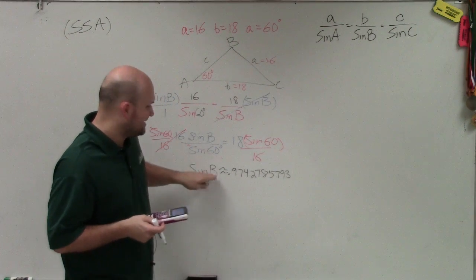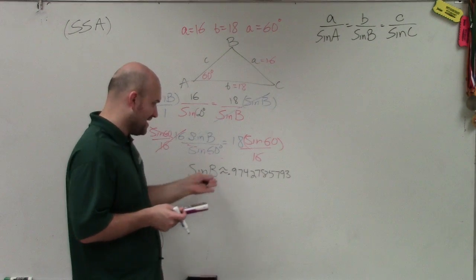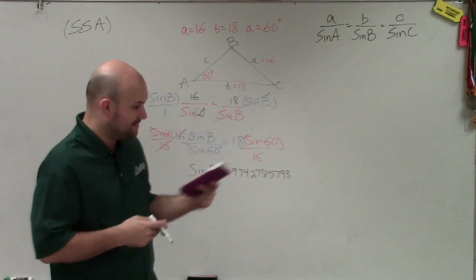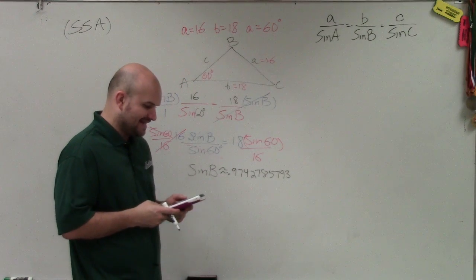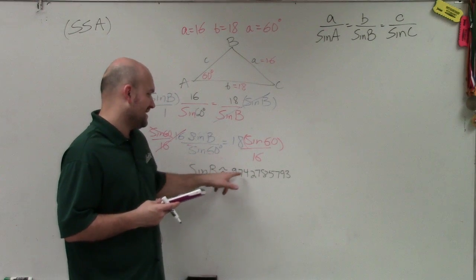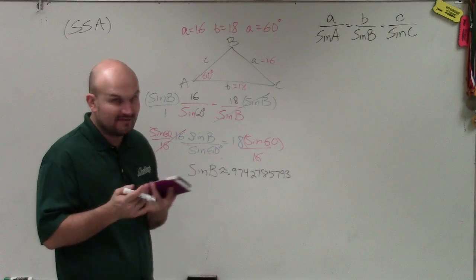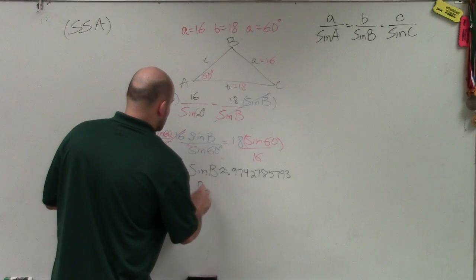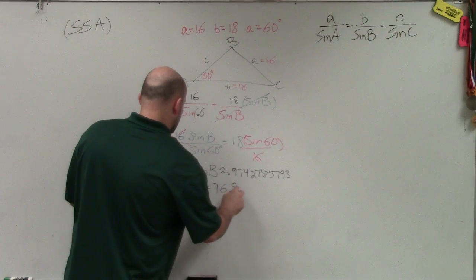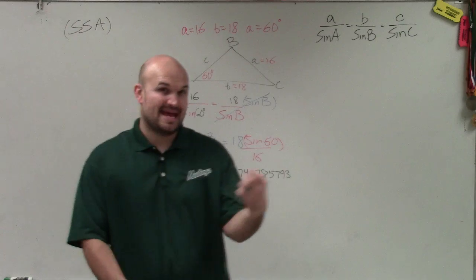I'm trying to figure out angle B. If sine of B is equal to approximately 0.97427, to find B I need to use the inverse sine. So I type in inverse sine of 0.97427 and I get an angle of 76.97. Rounding to the nearest hundredth, that's going to be 76.98 degrees. That is angle B.